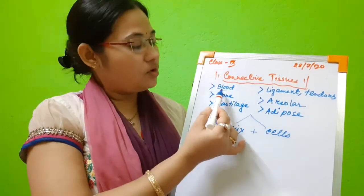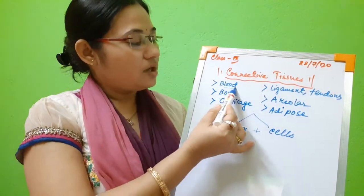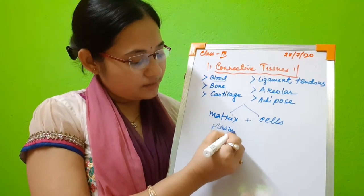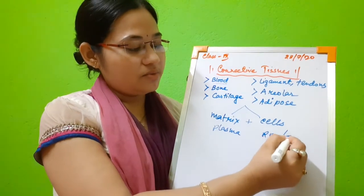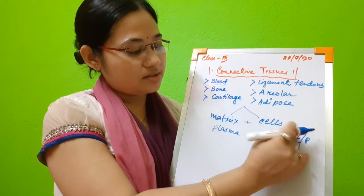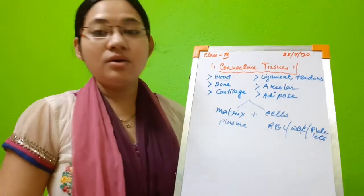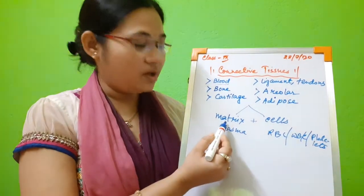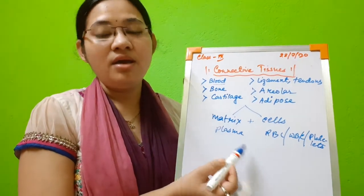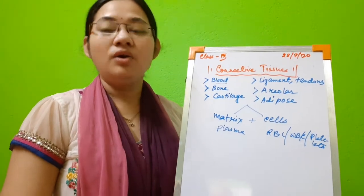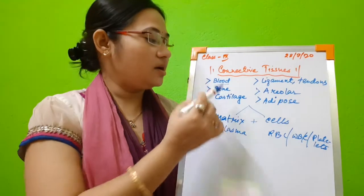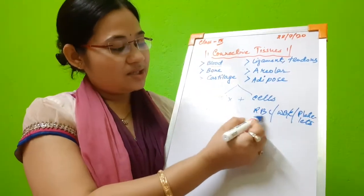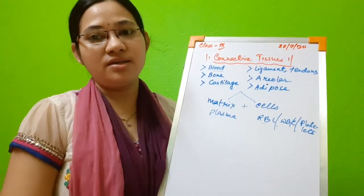I have given you notes about blood, bone, and cartilage. Blood is made up of a fluid matrix called plasma, and cells which are RBC, WBC, and platelets. Blood connects different parts of our body, that is why blood is called a fluid connective tissue. Blood is made up of some cells embedded in a fluid matrix called plasma.